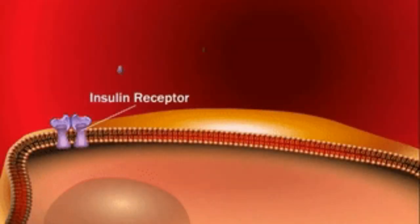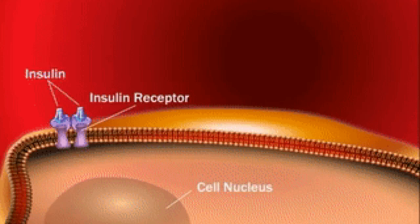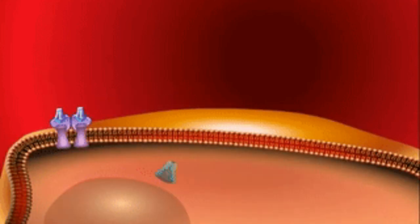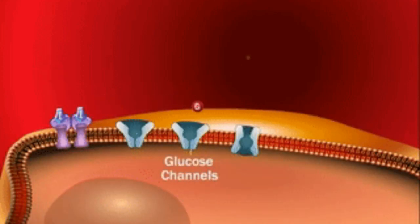Ketones do not require insulin and can directly diffuse into the cell, which is a major benefit. Type 2 diabetes mellitus risk is decreased, and insulin sensitivity is increased because glucose is not excessively stimulating the insulin receptor — the tyrosine kinase receptor — so the receptors remain more responsive and functional.